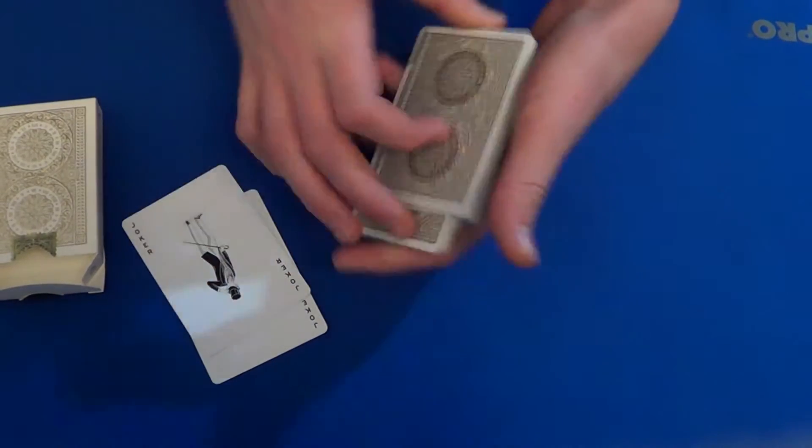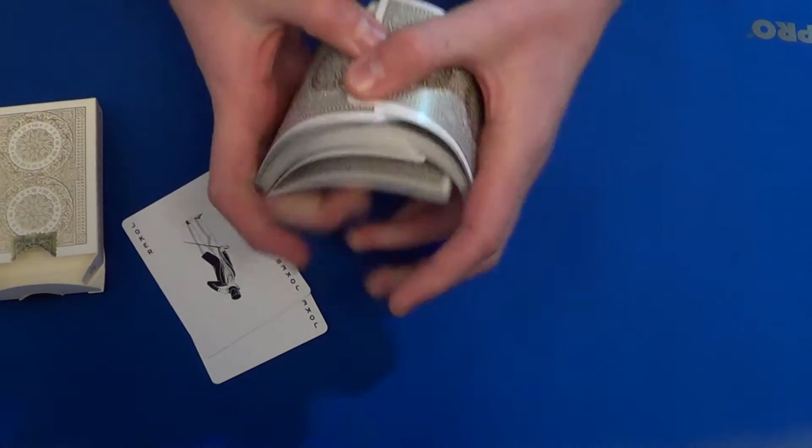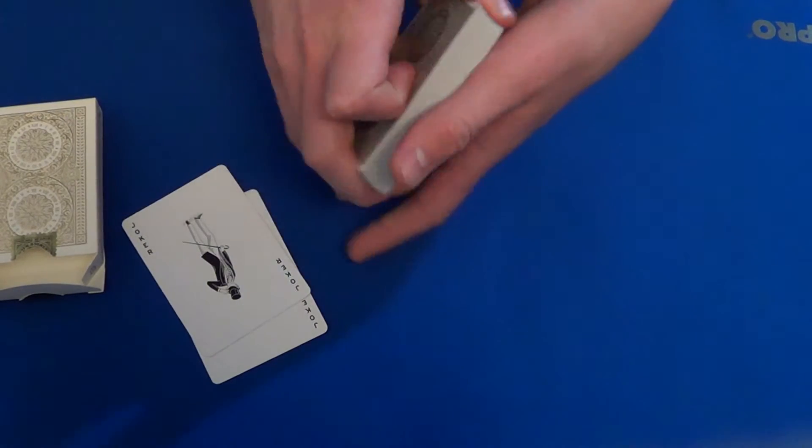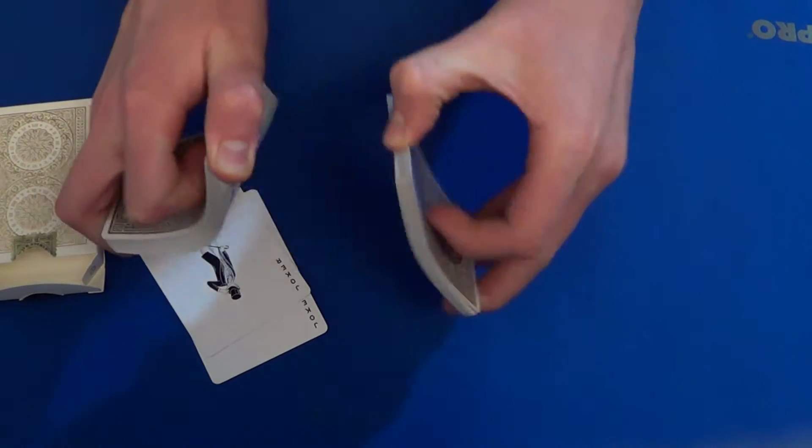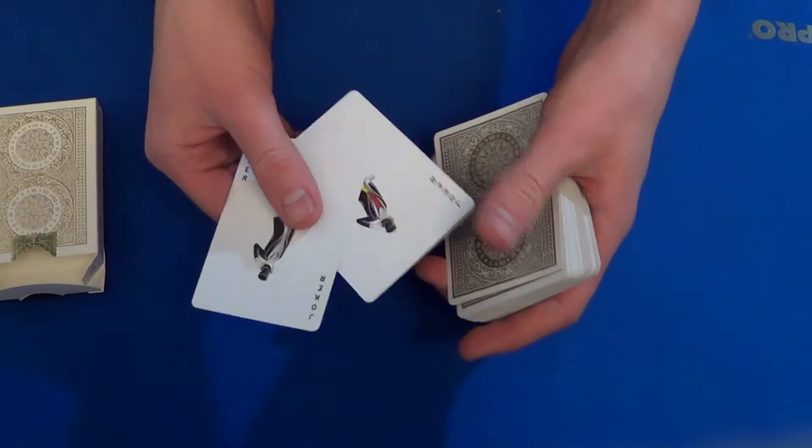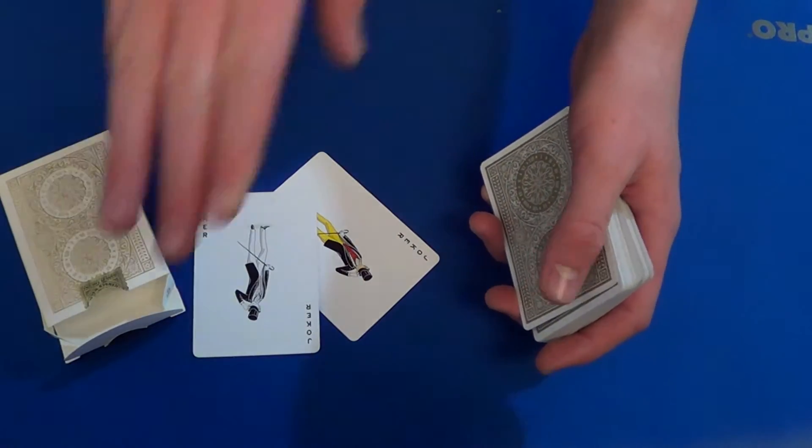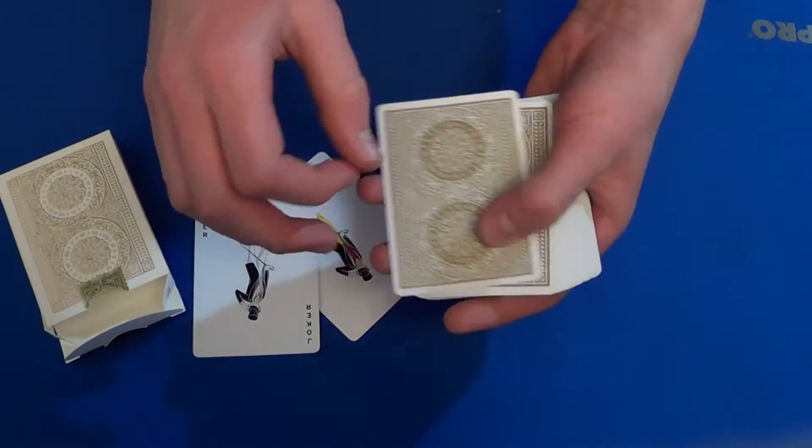So what you want to do, the deck can be freely shuffled by a spectator or whatever. It's completely mixed up. What you want to do is just show the jokers right here. I have one, two jokers. You have that before the trick, and the box is empty, and by the way, I did not help with the trick. I was just a spectator, I promise.